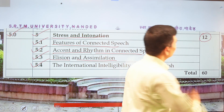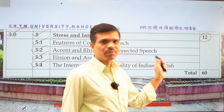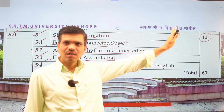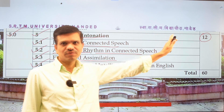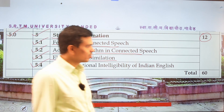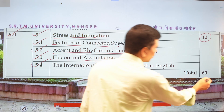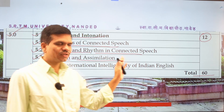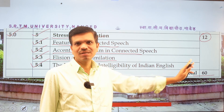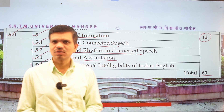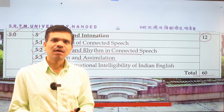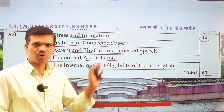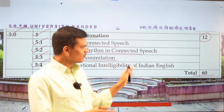Each unit has 12 hours of teaching — 12 lectures to complete — and in total there are 60 lectures for this paper. To complete the paper you need to attend 60 hours of teaching to cover all the syllabus. I think you now understand this syllabus.